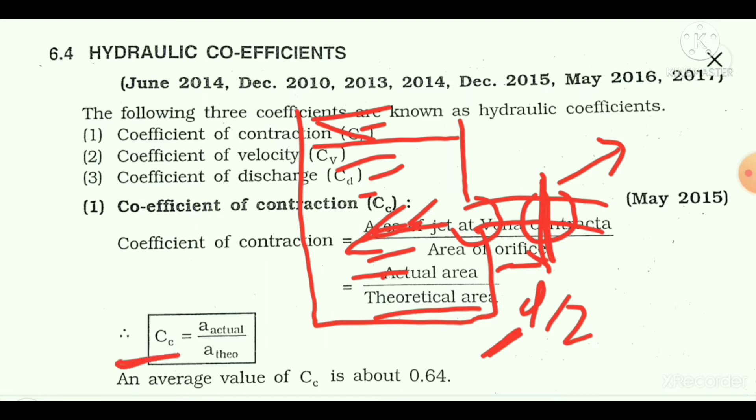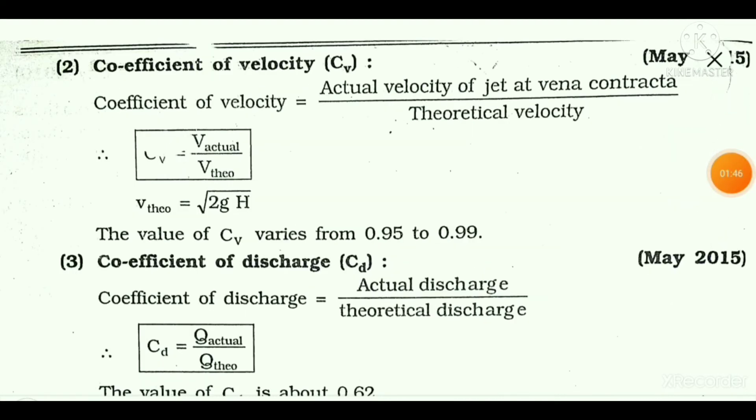When the actual area is divided by the theoretical area, the value that comes out is a constant — that is Cc, the coefficient of contraction. The average value of the coefficient of contraction is 0.64.